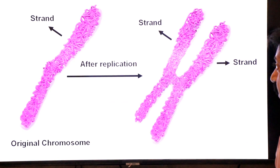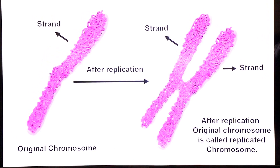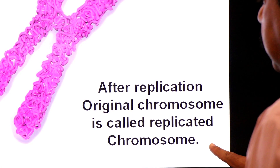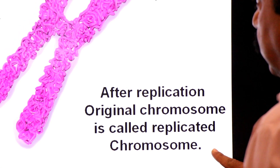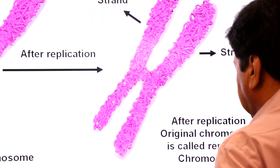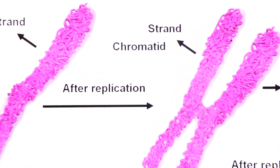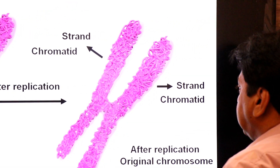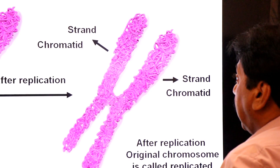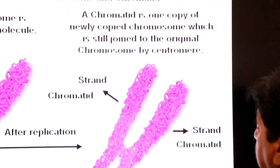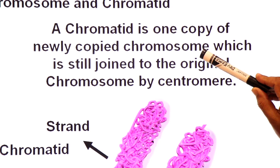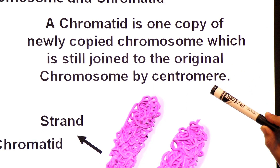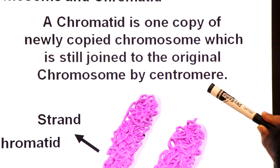During interphase, replication (self-duplication) occurs, and the original chromosome is transformed into a replicated chromosome. After replication, the original chromosome is called the replicated chromosome, which has two DNA strands. One daughter strand is called one chromatid, and the second daughter strand is called the second chromatid. A chromatid is one copy of a newly copied chromosome which is still joined to the original chromosome by a centromere.